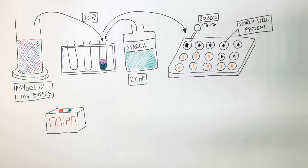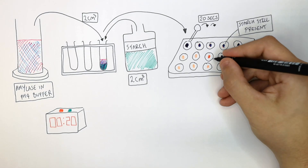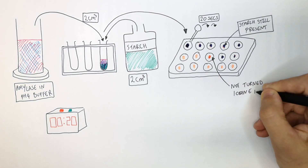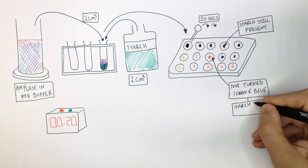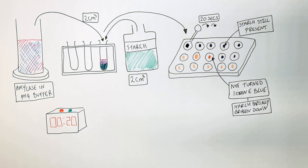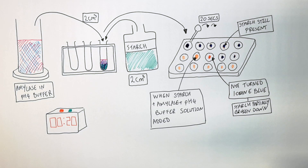There is an in-between stage where the iodine will turn a bricky-red color — this is when the starch is partially broken down but not completely. We then expect the next well to remain yellow. When the starch, amylase, and buffer solution are added and the iodine remains yellow, this means all of the starch has been broken down.